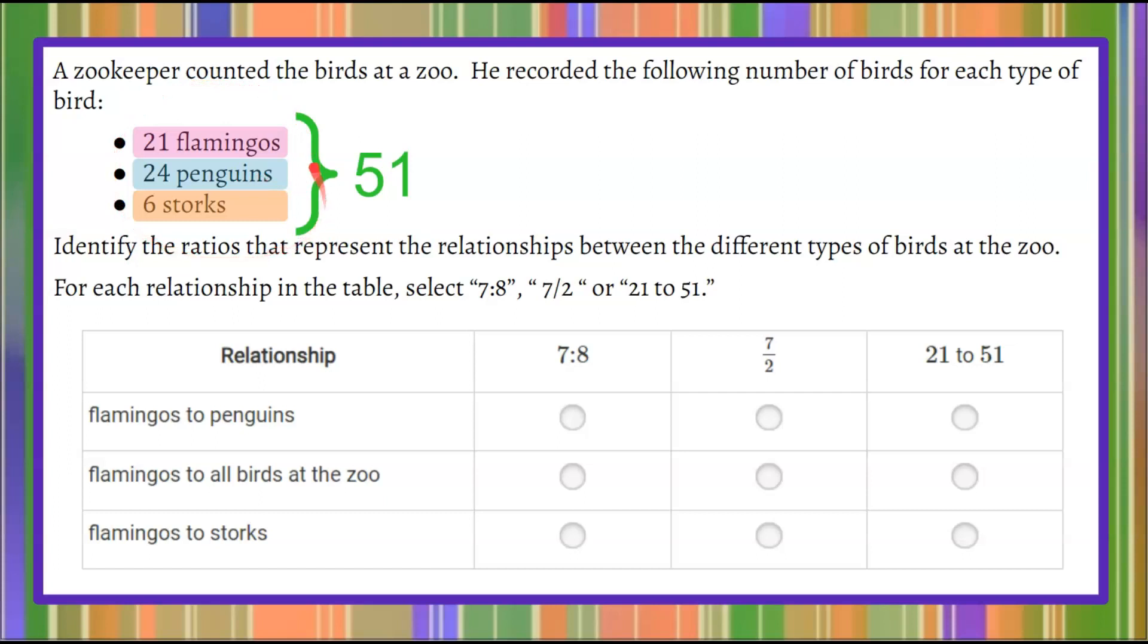So that's going to become important to understand that we have a total of 51 birds, 21 of them are flamingos, 24 of them are penguins, and 6 of them are storks. Then I'm looking down at those relationships. So I'm going to color code this for myself. Flamingos to penguins, and flamingos are 21. So if I go back up, I'm making notes here. 21 flamingos, colon, noticing that we can use a colon, a fraction bar, or the word to to represent the ratio. Any of them are acceptable. So penguins is 24. So we have 21 to 24.